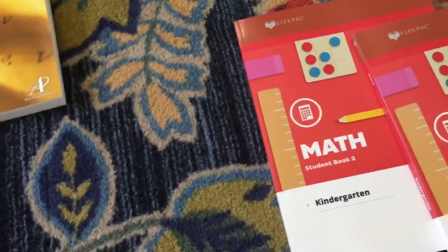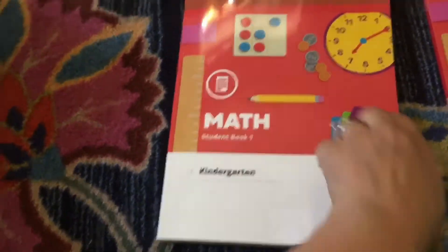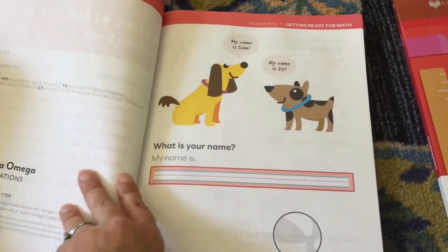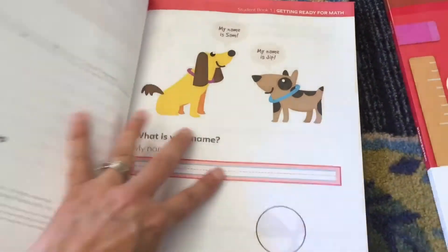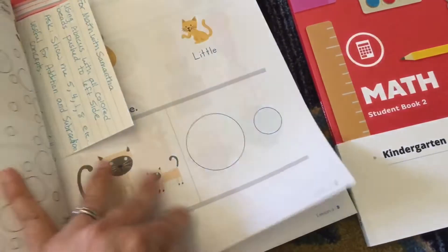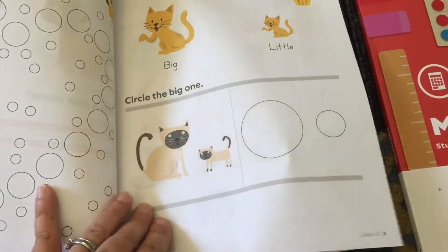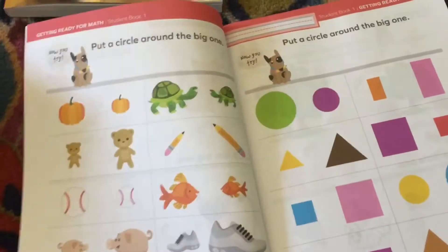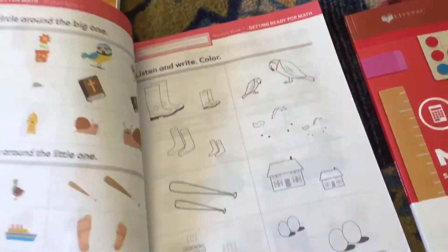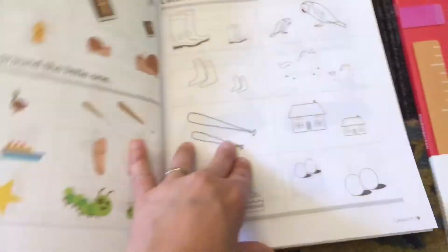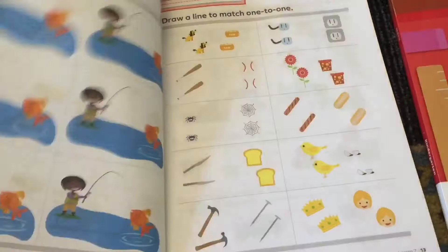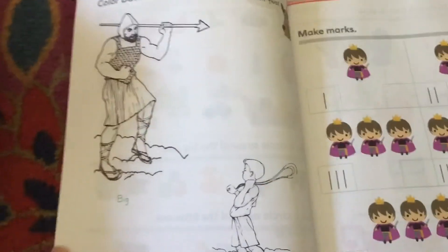So here is book one. It's very colorful. This is lesson one, you're going to learn about Sam and Jip, and then it goes into lesson two: big, little, and as you can see, shapes.